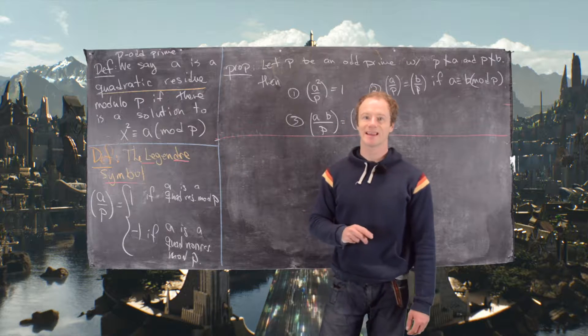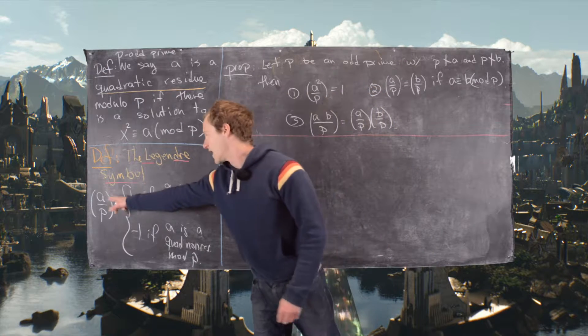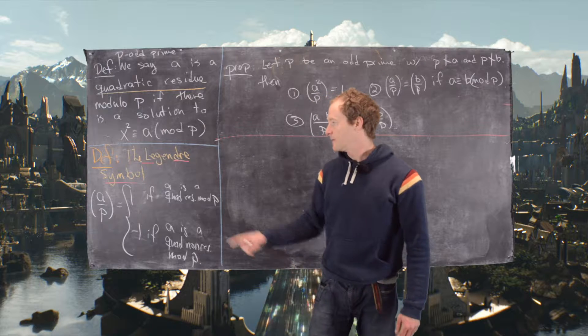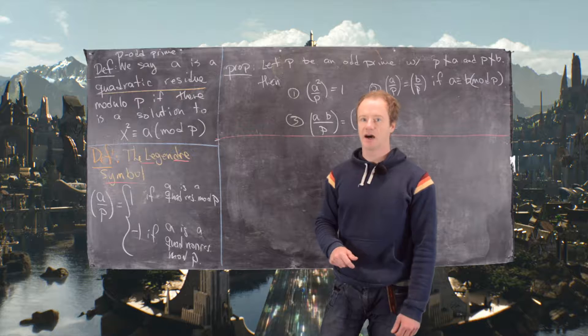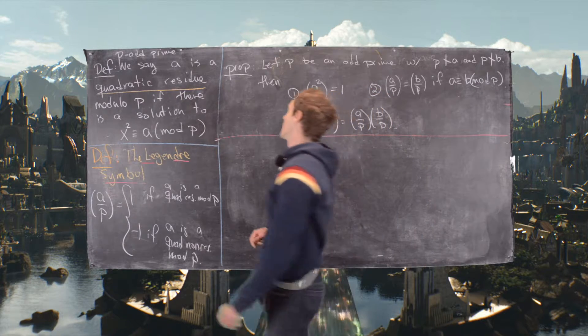Further, the Legendre symbol is like a question, so we say in parentheses a by p is 1 if a is a quadratic residue and it's negative 1 if it's not a quadratic residue.